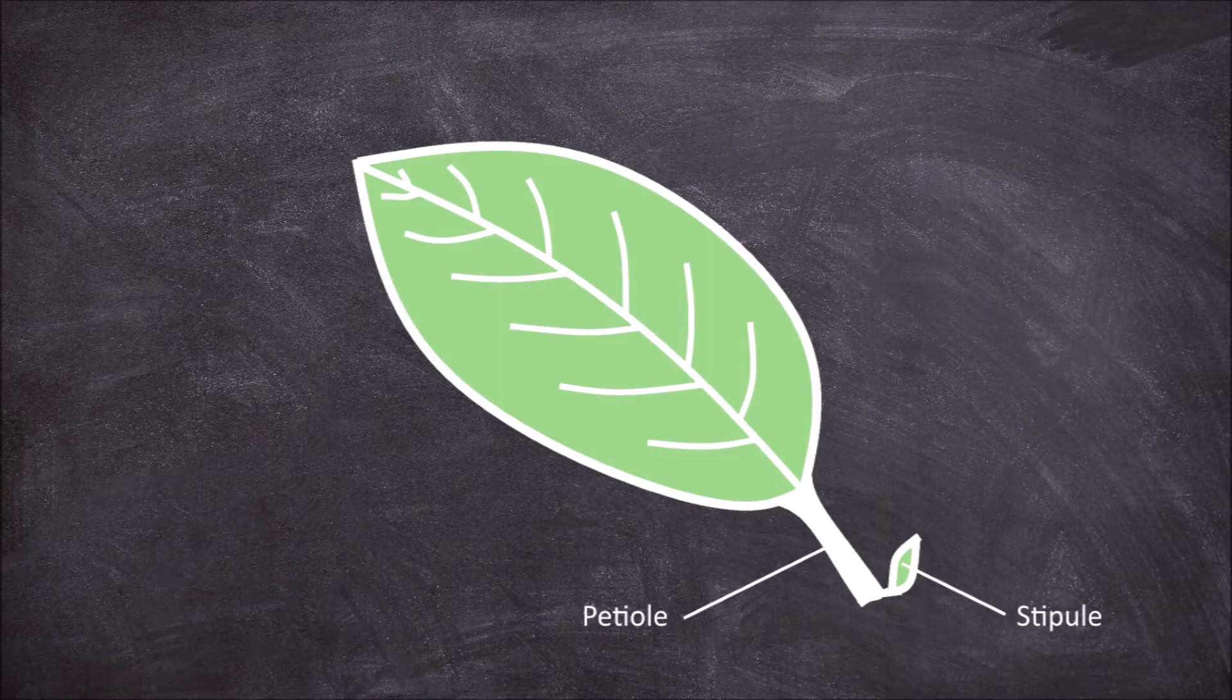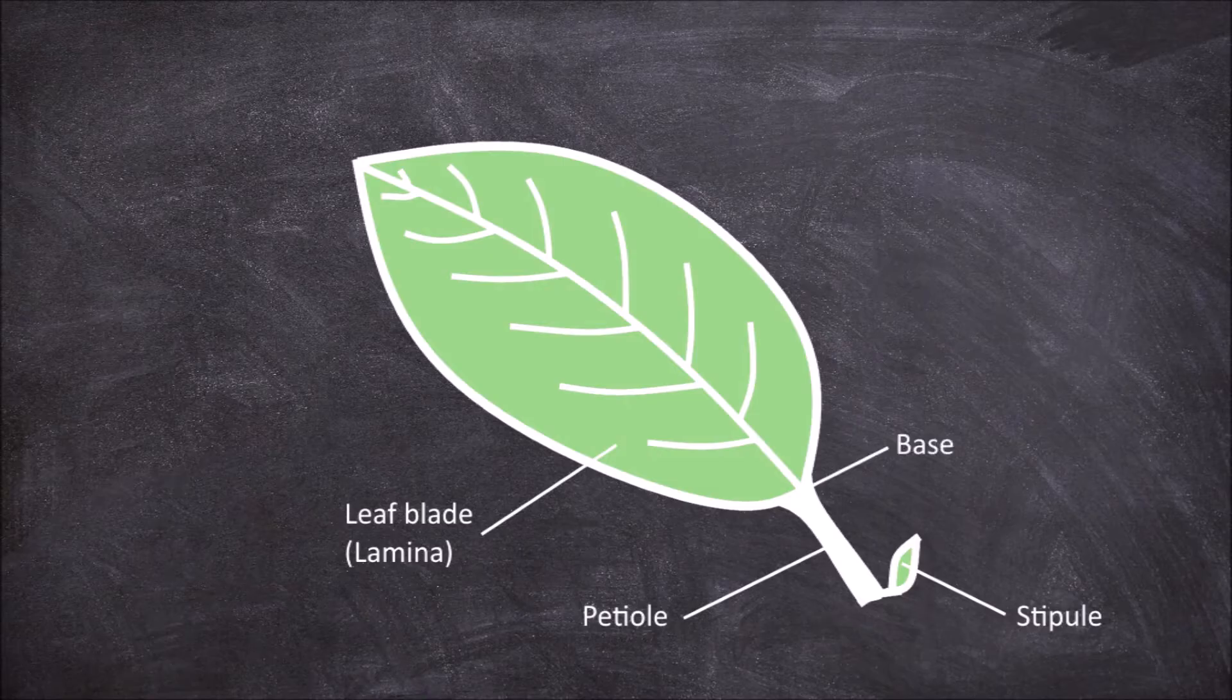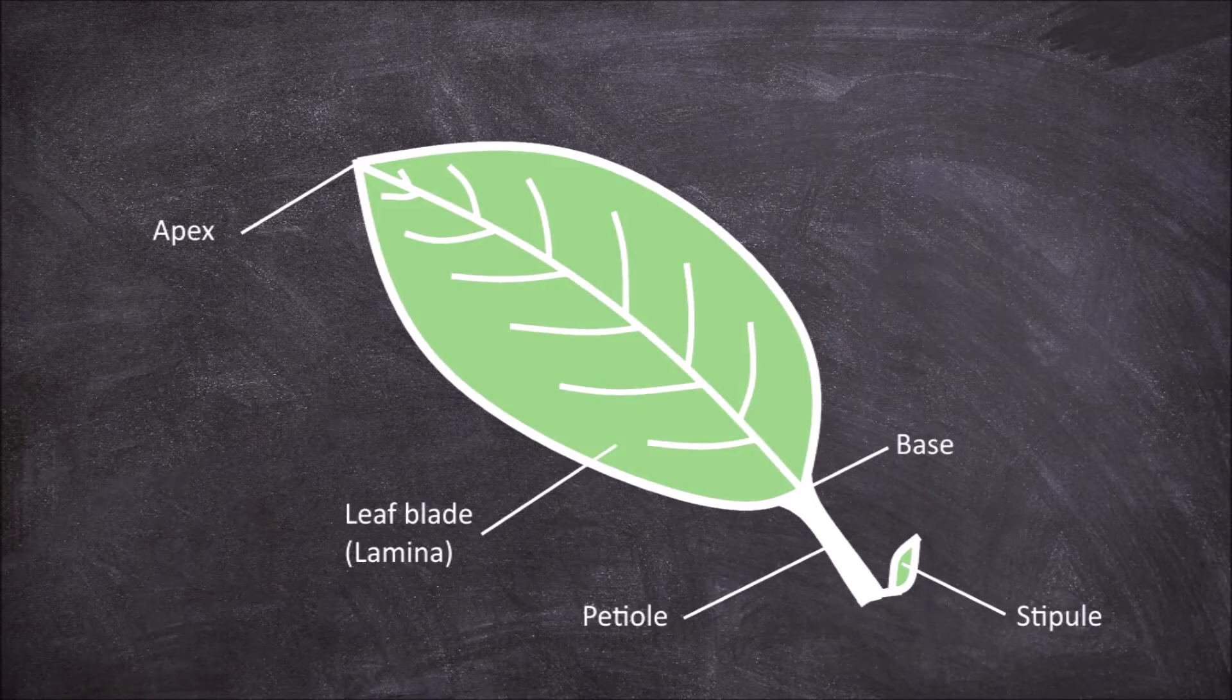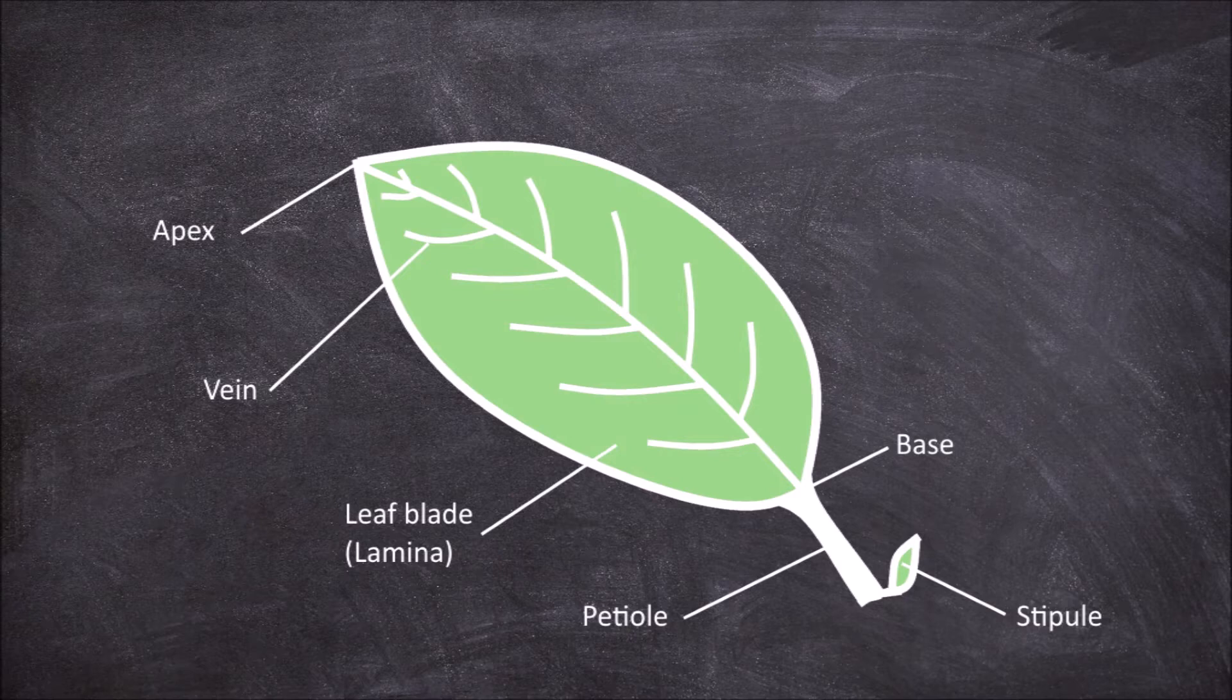The main part of the leaf is called the leaf blade or lamina. The leaf blade has a base where it connects with the petiole and an apex at the tip of the blade. Veins branch out through the blade of the leaf. The edges of the blade are called the margin.